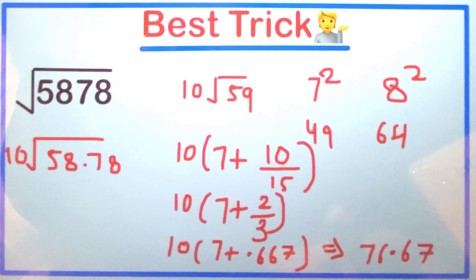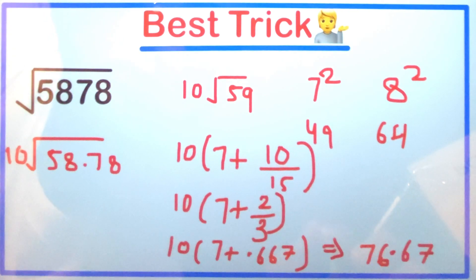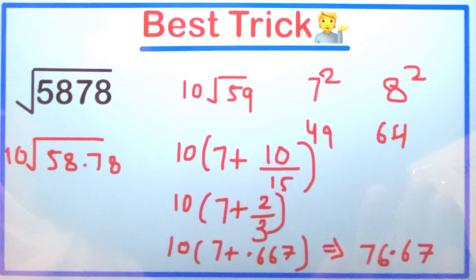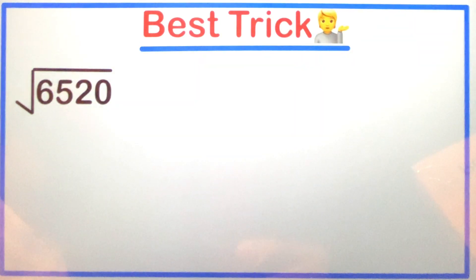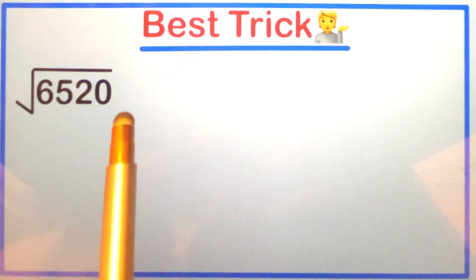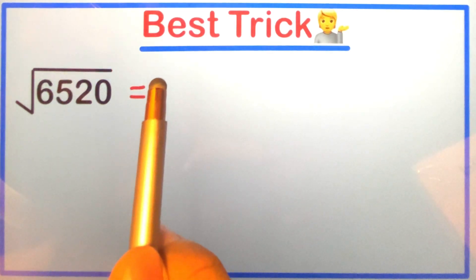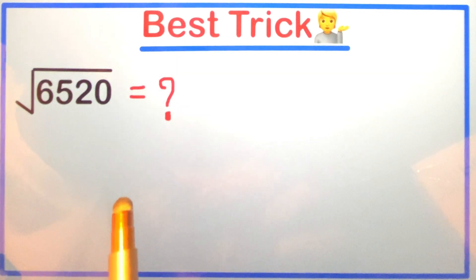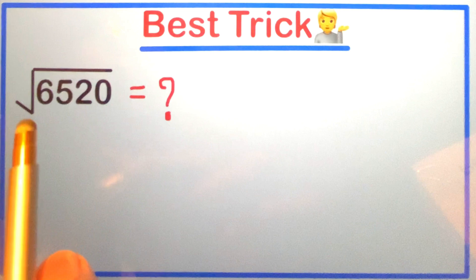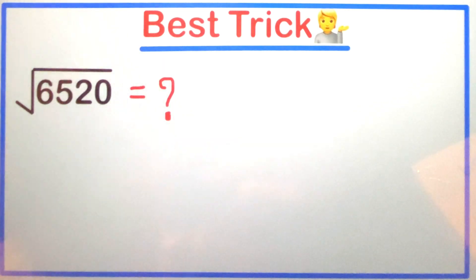So the answer is 10 × (7 + 0.667) = 10 × 7.667, giving 76.67. That is our answer! Now I will give you one practice question — find the square root of 6520. Solve it and write your answer in the comment box. If you enjoyed this video please give it a thumbs up, subscribe to the channel if you are watching for the first time. Thanks for watching!